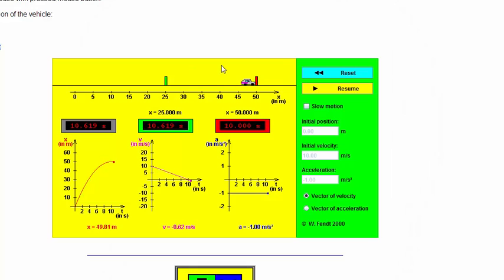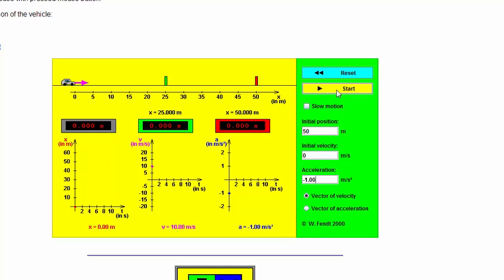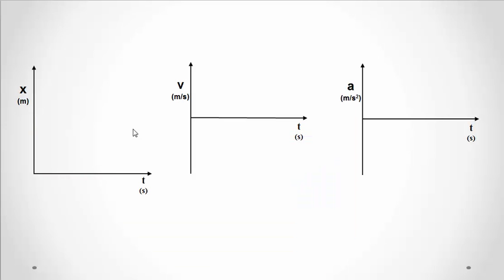For case three, we start on the right side at rest and speed up in the negative direction. The position graph starts flat and curves downward because the slope becomes more and more negative. The velocity starts at zero and becomes increasingly negative — you are speeding up, just in the negative direction. The acceleration is constant and negative, meaning both cases three and four are essentially mirrors of the first two with directions reversed.